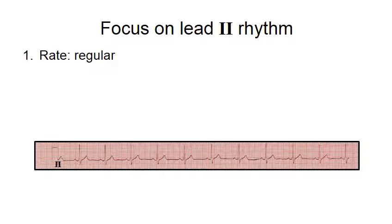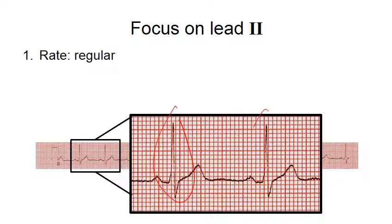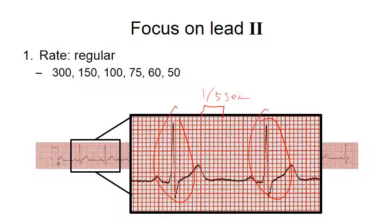We can determine rate of the regular rhythm by counting the number of boxes. In this example, I'll simply count the number of big boxes between the two QRS waves. The way this works is that one big box corresponds to one-fifth of a second. If you see a beat every big box, that means it's beating five beats per second or 300 beats per minute. If you see a beat every two big boxes, it's half as slow. So instead of counting 1, 2, 3, 4, 5, people count 300, 150, 100, 75, and so on.